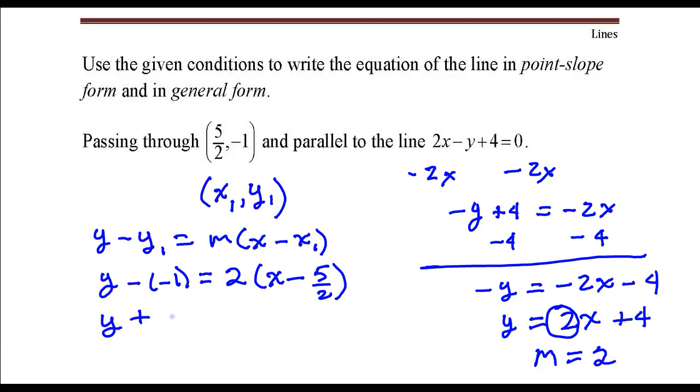So this is y plus 1 equals 2 times (x minus 5 halves). And that is the equation of the line in point-slope form.